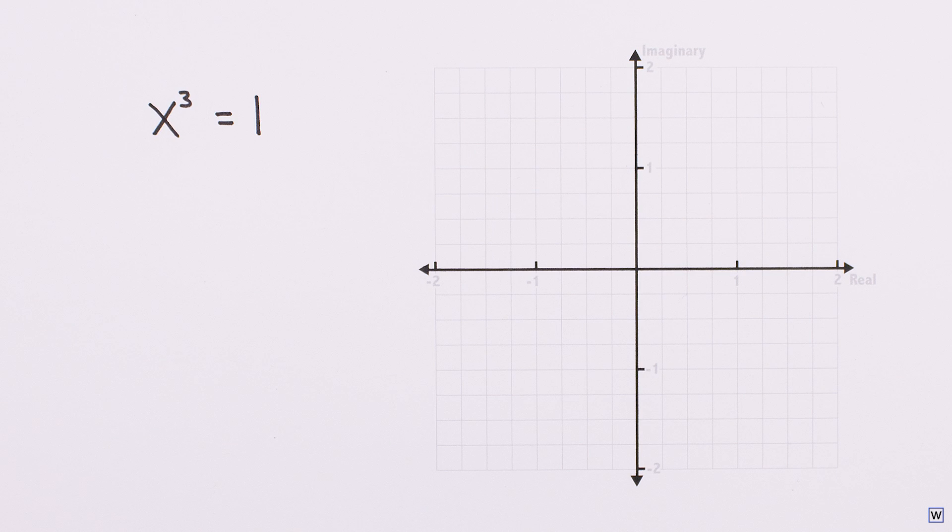Instead, let's try to solve the problem visually using the complex plane. Our question in words is what numbers, when multiplied by themselves 3 times, equal 1?